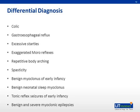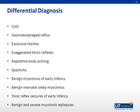Differential diagnosis. Spasms have varied appearances and severities, and for that reason, a broad differential is required. Given such a large number of possible causes for abnormal movements in infants, the diagnosis of infantile spasms is often delayed. Other clinical entities to consider range from benign and transient to devastating. The differential includes colic, gastroesophageal reflux or Sandifer syndrome, excessive startles, exaggerated Moro reflexes, repetitive body arching, spasticity, benign myoclonus of early infancy, benign neonatal sleep myoclonus, tonic reflex seizures of early infancy, and benign and severe myoclonic epilepsies.